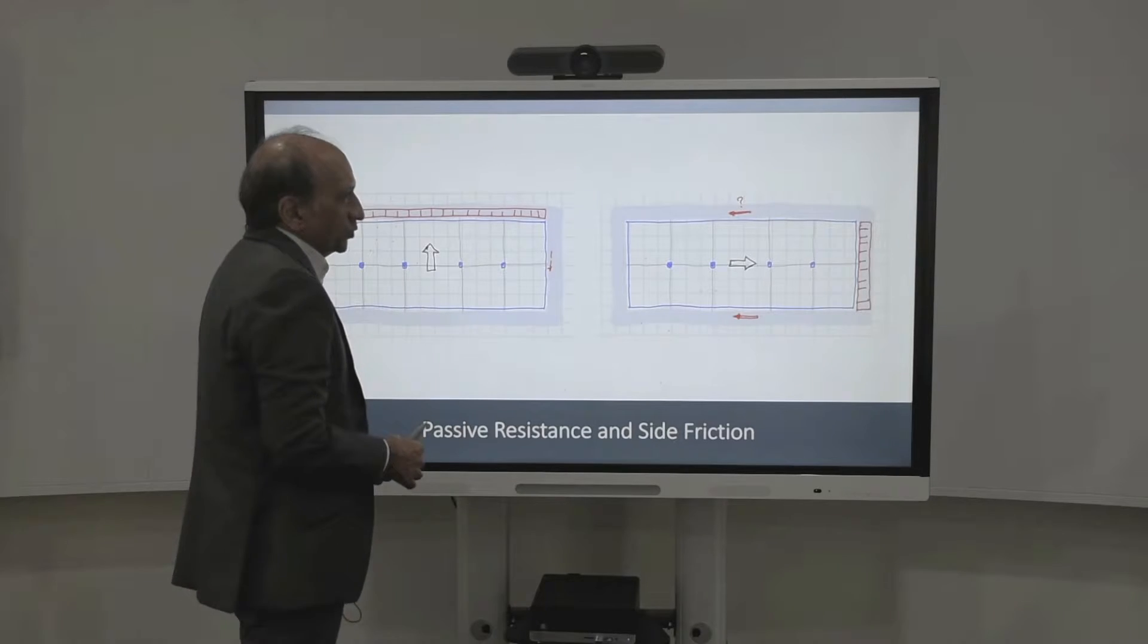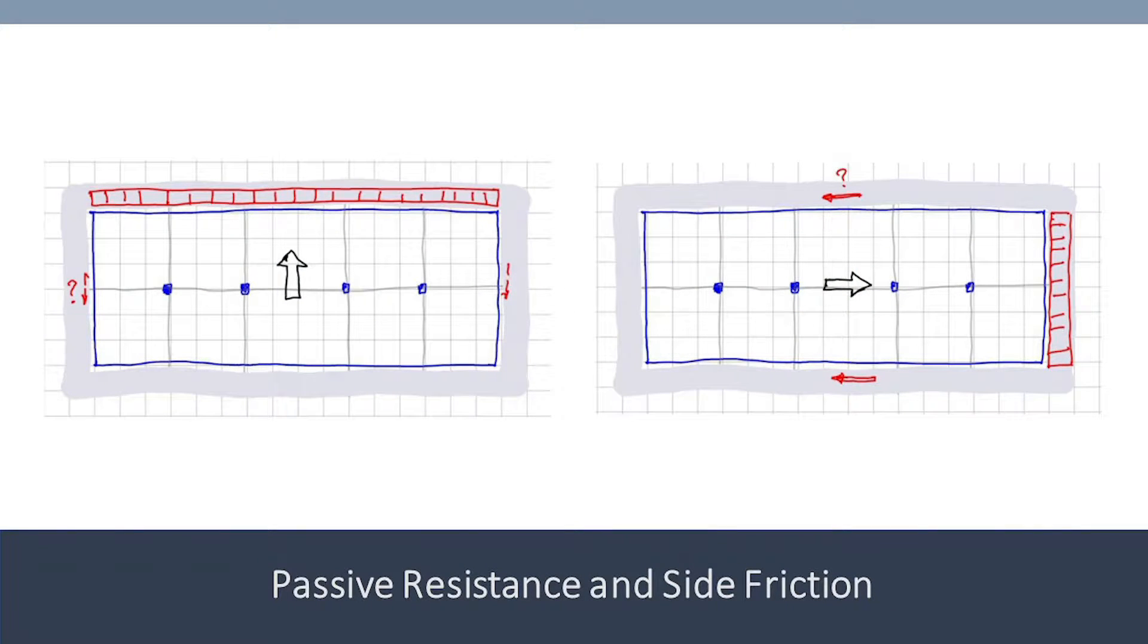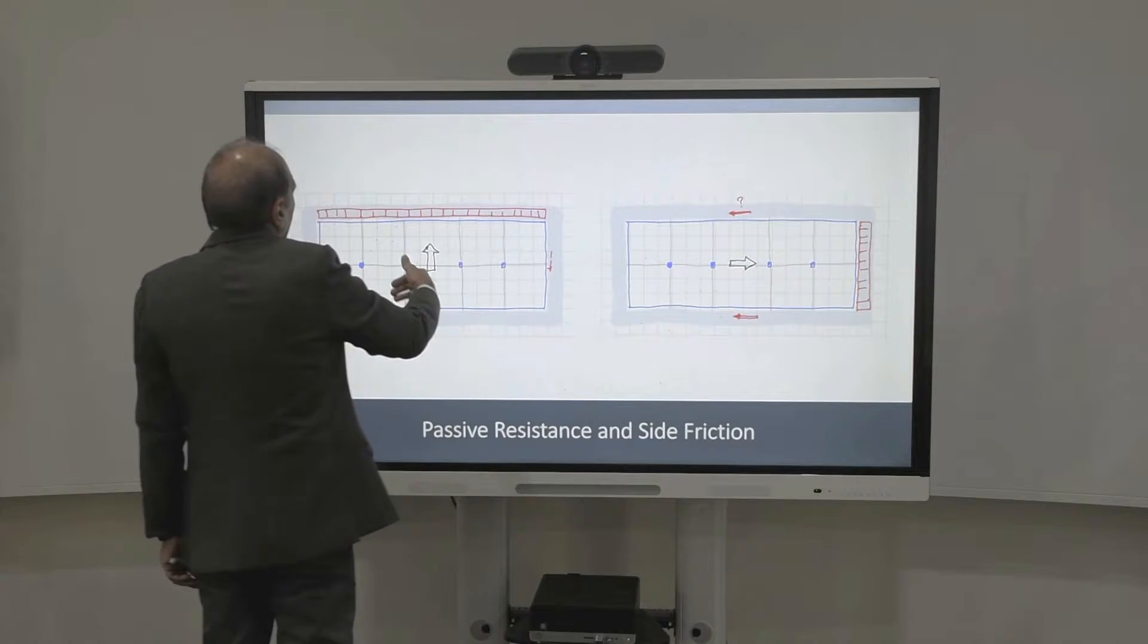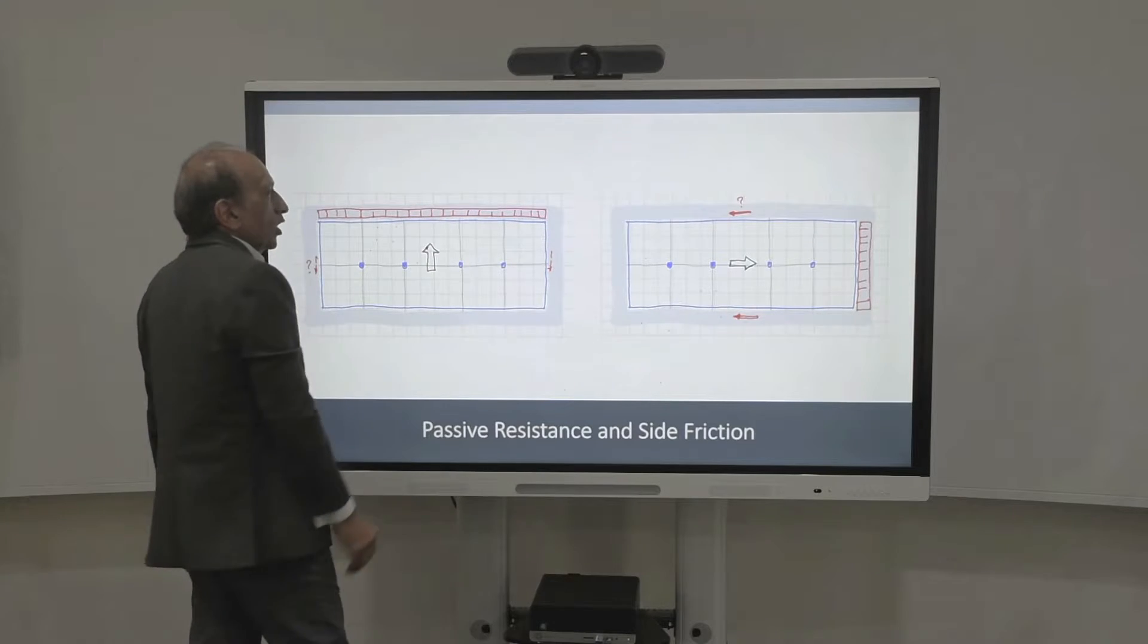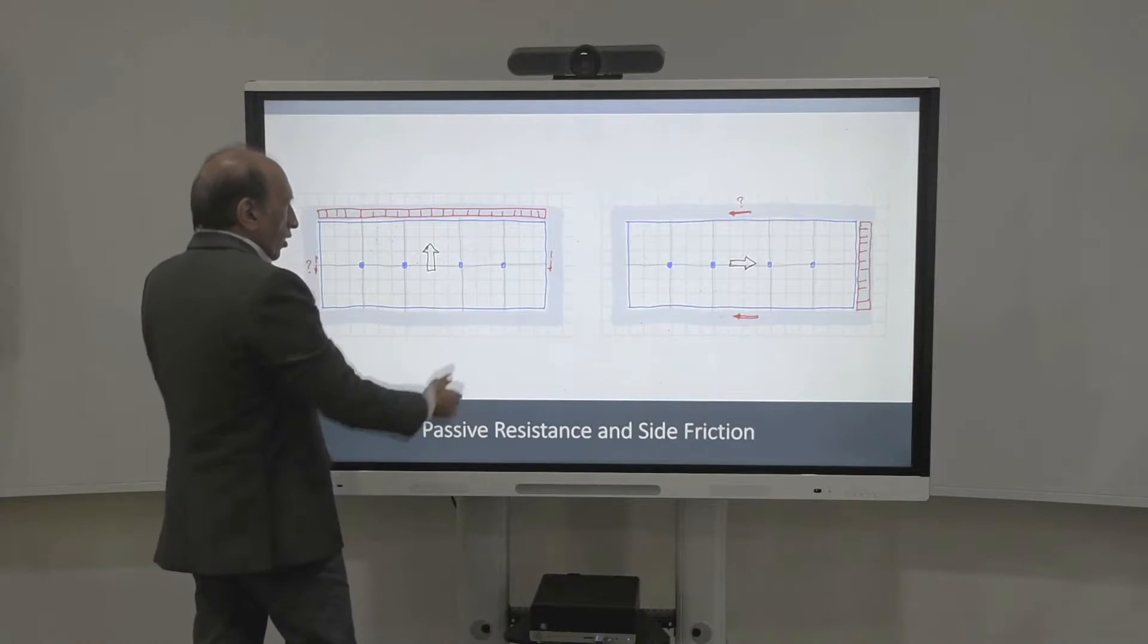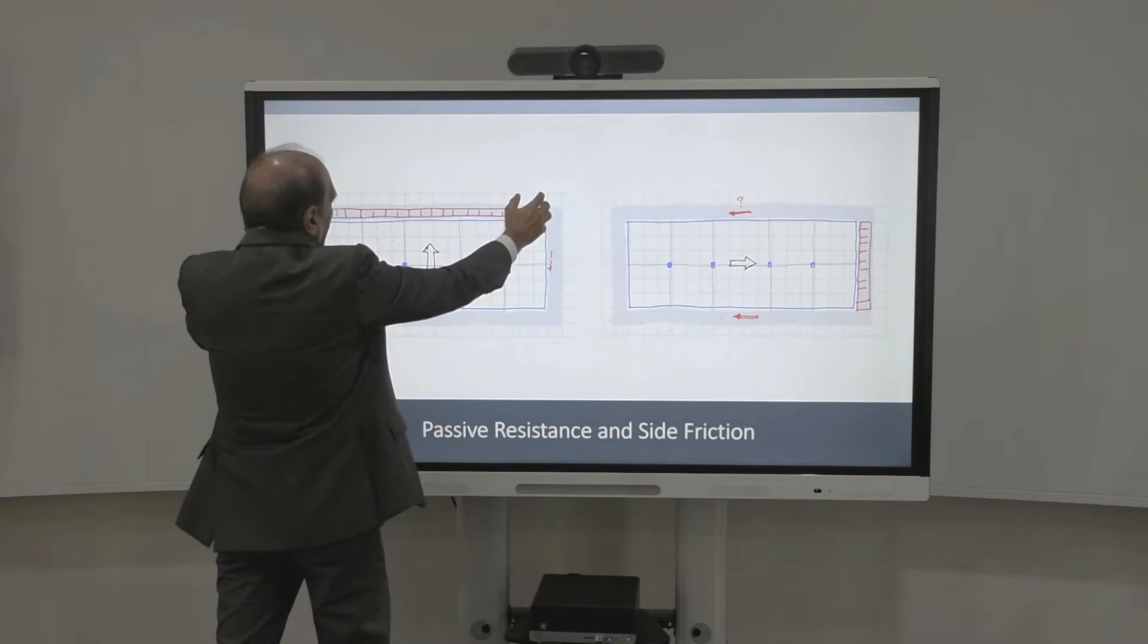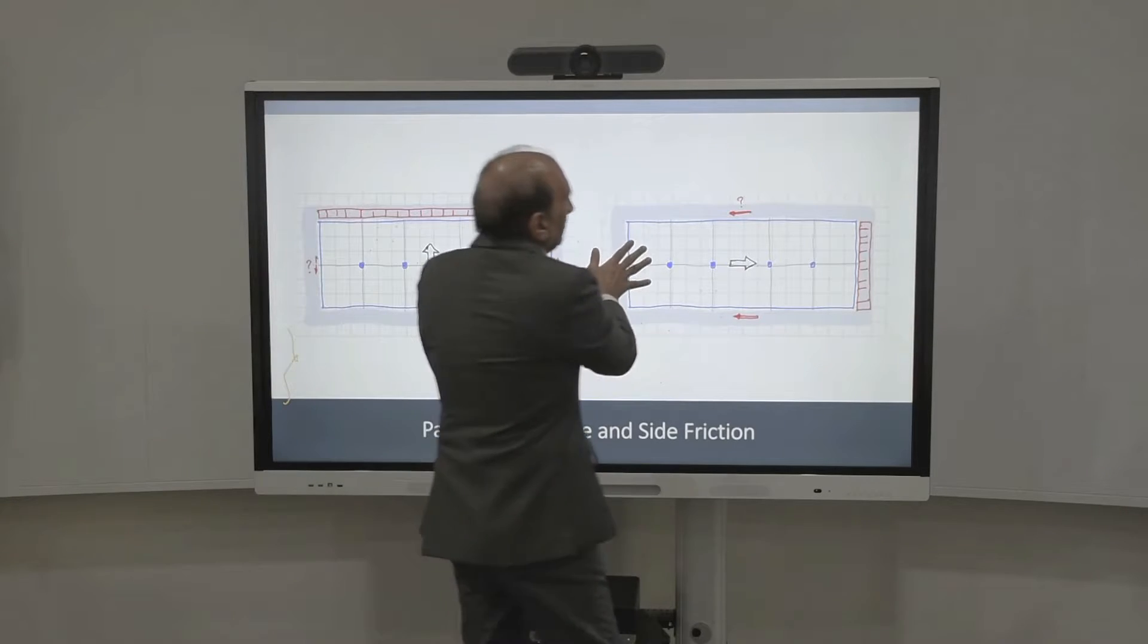But then we come to another situation. Let's look at the plan of the same building. And now we look at that and we have soil all around that, right? So when the building starts to move in this direction, looking from the top, then this side front of the wall will try to stop it from moving. And the sides of the wall here will have skin friction also act a little bit. This may be small compared to that side, that resistance provided by the soil in the front.